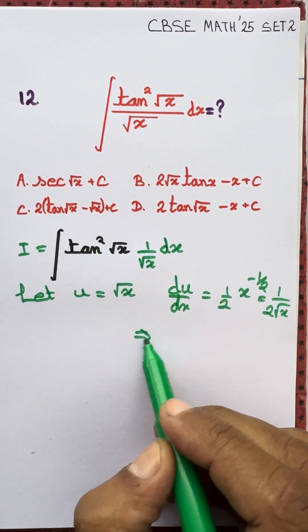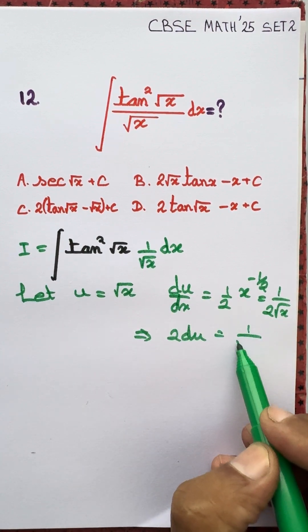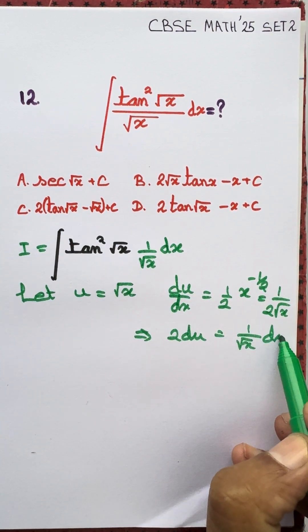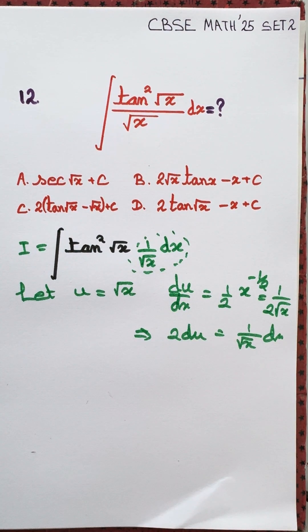We can write this as two du equals one by root x dx, so we replace one by root x dx by two du.